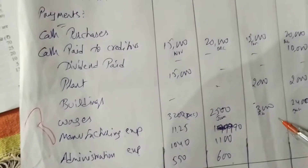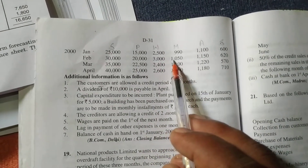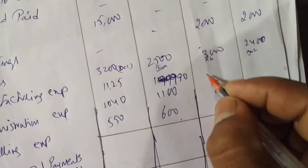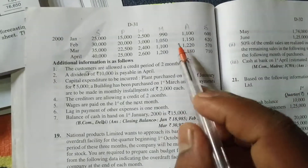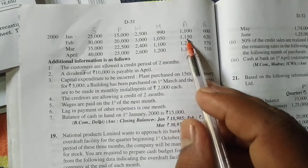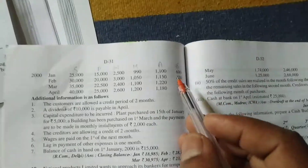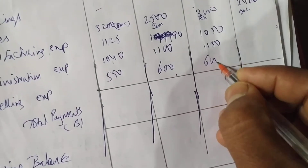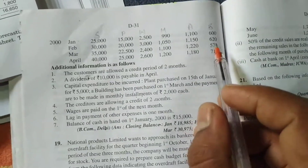In March we write February's expenses: manufacturing 1,050, administration 1,150, selling 620. These are all February month expenses to be paid in the month of March.